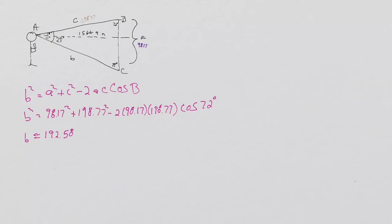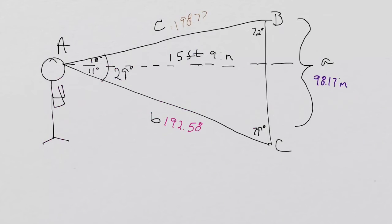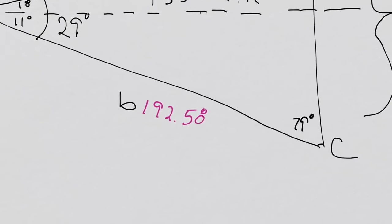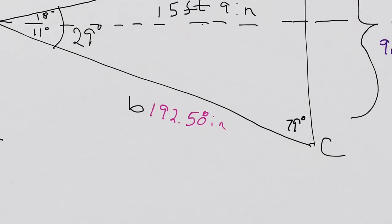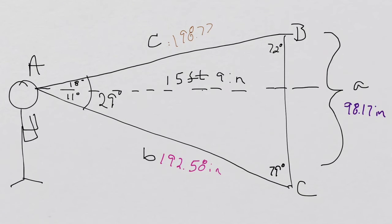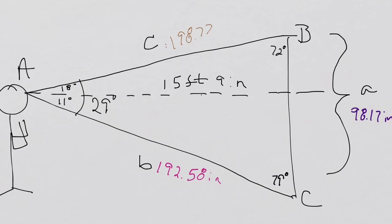So we can go ahead and label our initial triangle. So now at this point, we have all three sides. Side a is 98.17 inches, side b is 192.58 inches, and side c is 198.77 inches.